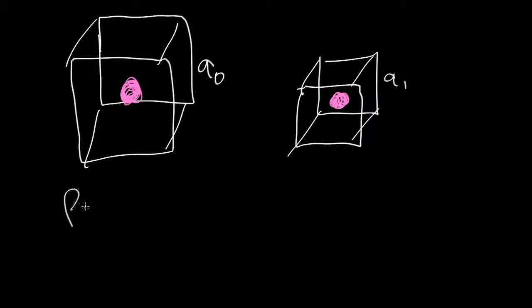Now if I want to figure out how the density back in the past compared to the density now evolves, I just measure the density, for example, back in the past. And that's equal to the mass in the box divided by the volume of the box, which is the scale factor cubed, because it's a cube with length a1.